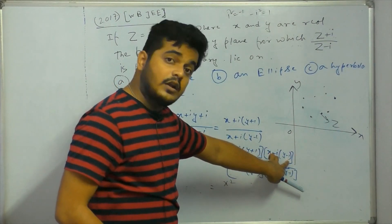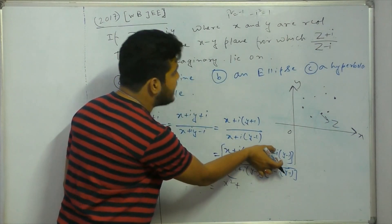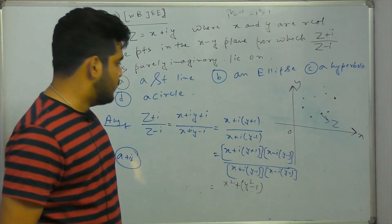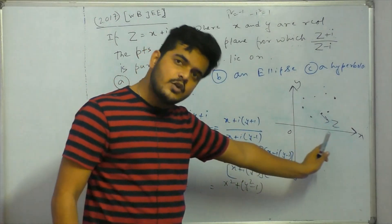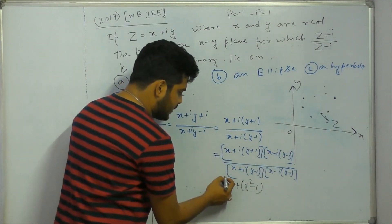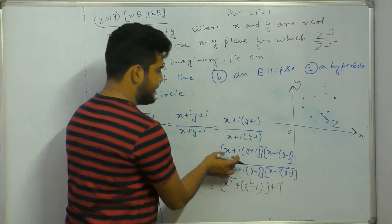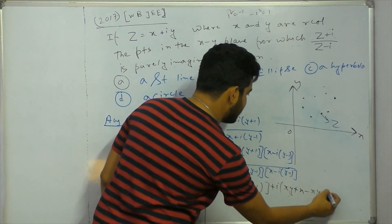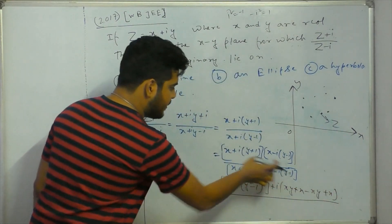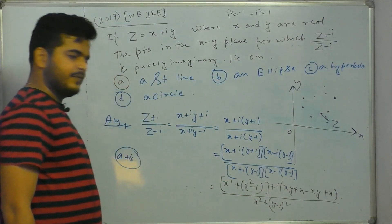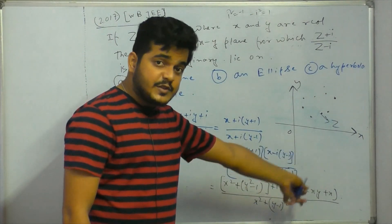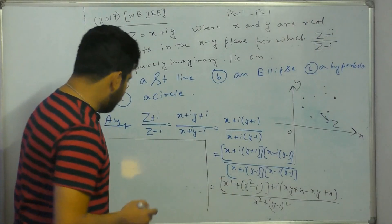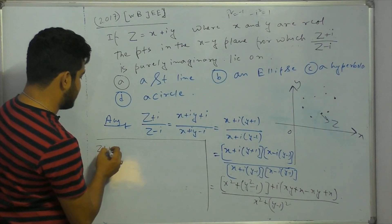This is the real part, plus i squared minus i squared. Minus i squared means 1. This is y squared minus 1. The real part, imaginary part, i into imaginary part: xy plus x, minus xy plus x, over x squared plus y minus 1 whole squared. If you don't have a plus b into a minus b, then you have a squared minus b squared. This is the real part. So what do we do? z plus i by z minus i — this is the real part.